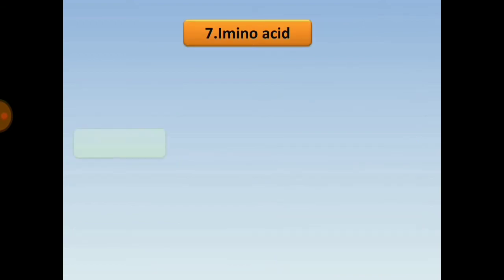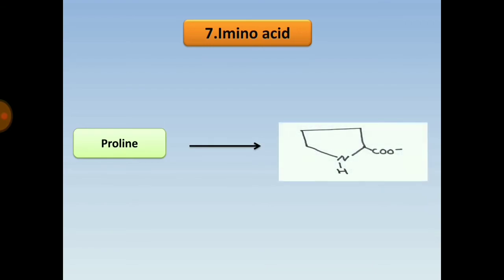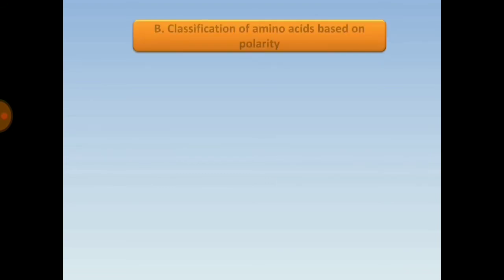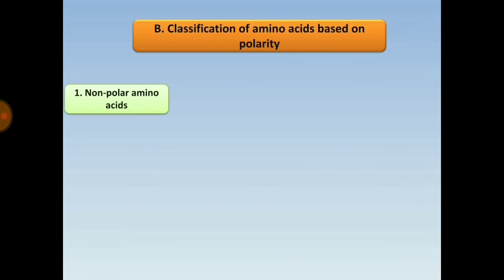A question that often appears in exams: which is the imino acid? There is only one imino acid — proline. Its structure is unique and distinct from the other amino acids, as can be observed from its diagram.